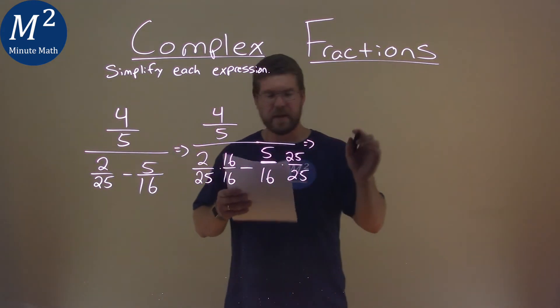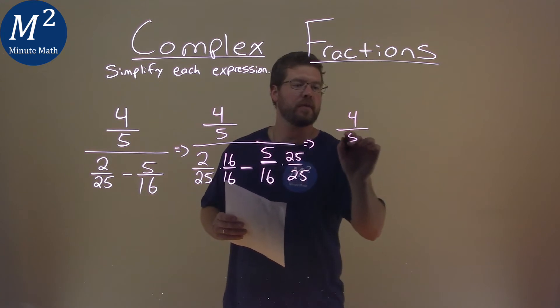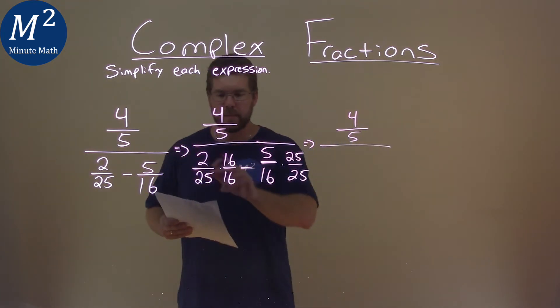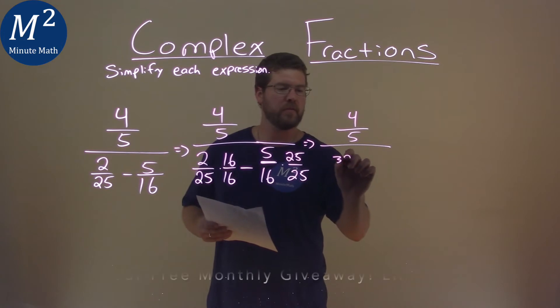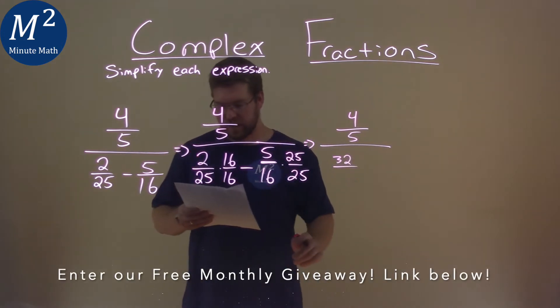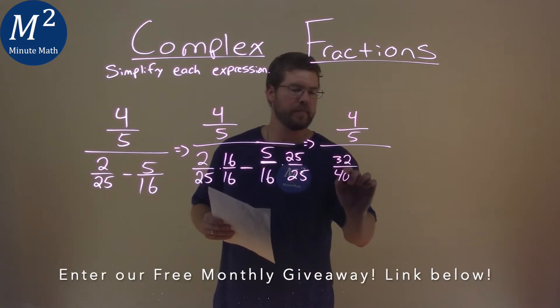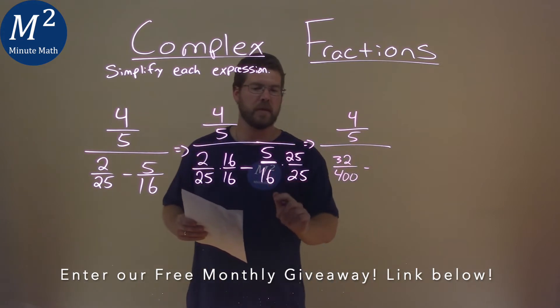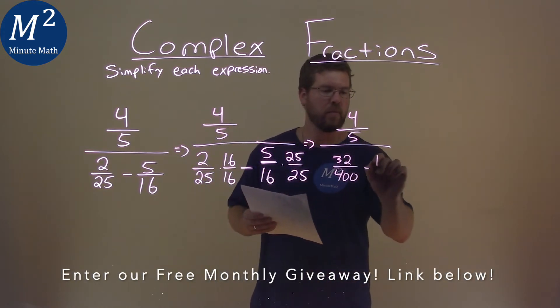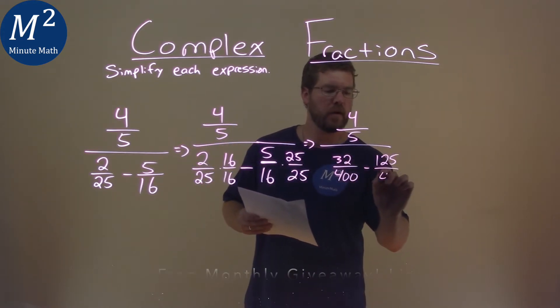So when doing so, again, I still have my 4 fifths in the big numerator, and the denominator would multiply this out, 2 times 16 is that 32 over 25 times 16, which is a 400. Same thing here, 25 times 5 is a 125 over 400.